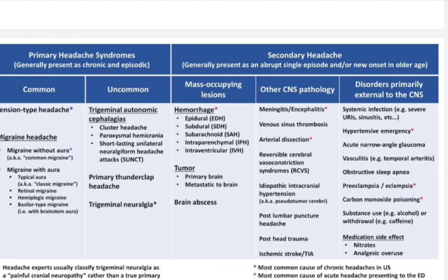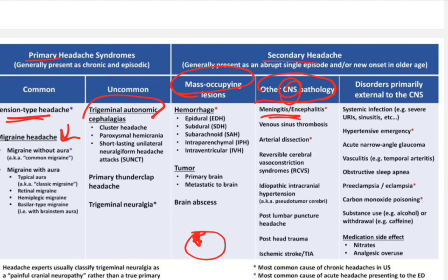As a quick recap: primary causes of headache include, most commonly, tension-type, then migraine, trigeminal neuralgia, mass-occupying lesion, and subarachnoid hemorrhage or tumor. CSF-related conditions include meningitis. Vascular causes include stroke. Extracranial or external CNS causes include hypertension, preeclampsia, and eclampsia.